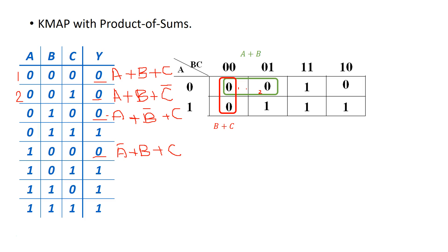Finally, I see one remaining 0. We can group this 0 with the other 0 across the corners. That blue group has A equal to 0, B changes, but C is equal to 0 across those two blue groups. So we write that as A OR C.